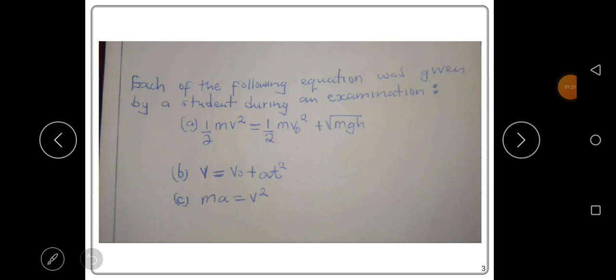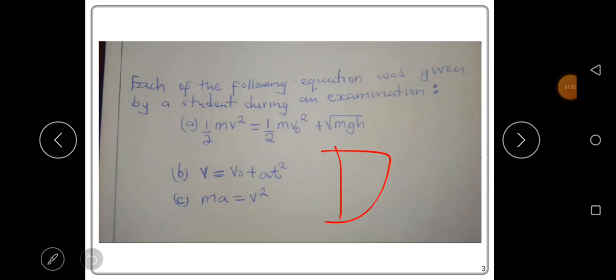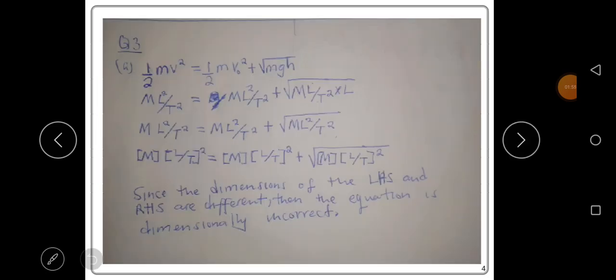Equation C is: ma equals v squared. These are the three equations given by the student during the exam. We want to find out if these equations are dimensionally correct. Let's start with the first equation: one-half mv squared equals one-half mv₀ squared plus the square root of mgh.